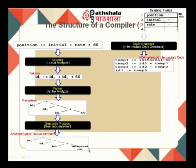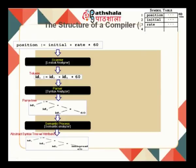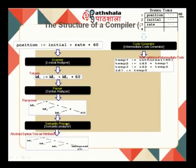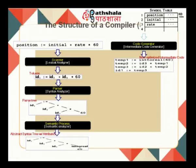In the intermediate code generation phase, every interior node of the parse tree is assigned a temporary variable and every leaf node corresponds to a user-defined variable. So: temp1 = intofloat(60), because 60 is an interior node result. Then temp2 = ID3 * temp1 (the star node). Then temp3 = ID2 + temp2. Finally, ID1 = temp3. This is the intermediate code, where we have at most three addresses to work with.